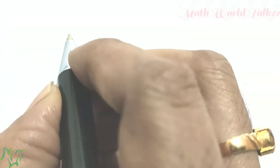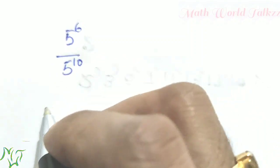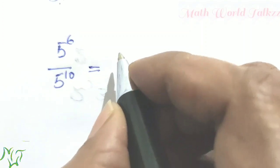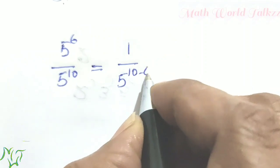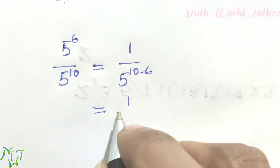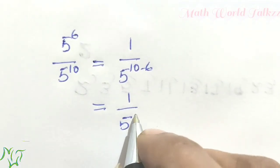Next question: What power of 1 by 5 do we get on dividing 5 raised to 6 by 5 raised to 10? First, find 5 raised to 6 by 5 raised to 10. We use the second division rule because the power in the denominator is bigger: 1 by 5 raised to 10 minus 6, which equals 1 by 5 raised to 4.